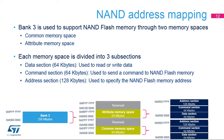Each memory space is subdivided into three sections: a data section of 64 kilobytes used to read or write data from NAND Flash memory; a command section of 64 kilobytes used to send a command to NAND Flash memory; and an address section of 128 kilobytes used to specify the NAND Flash memory address.